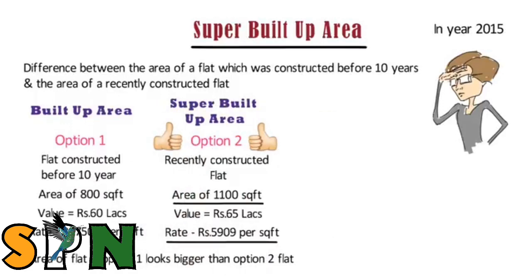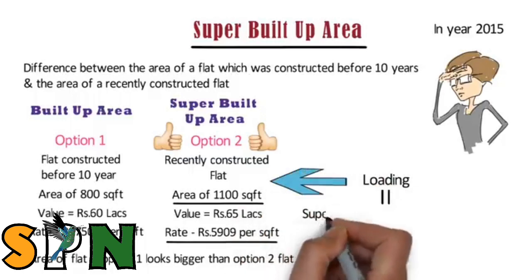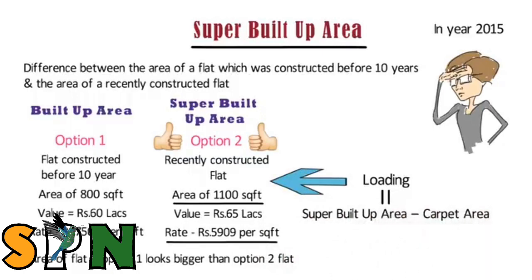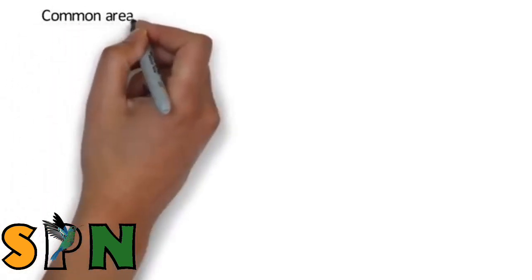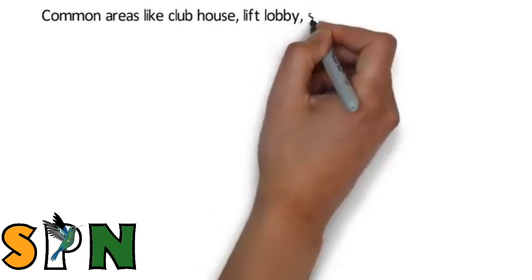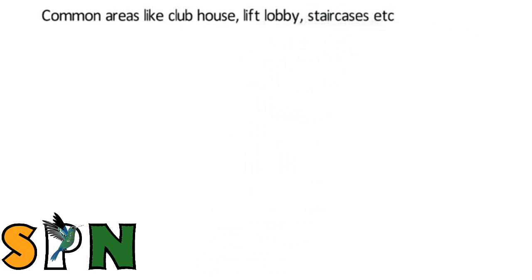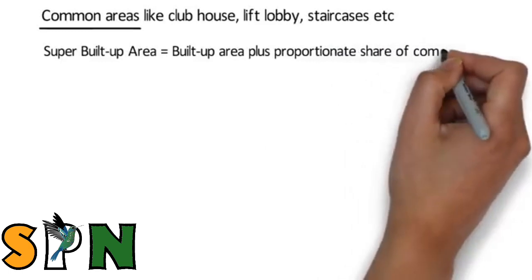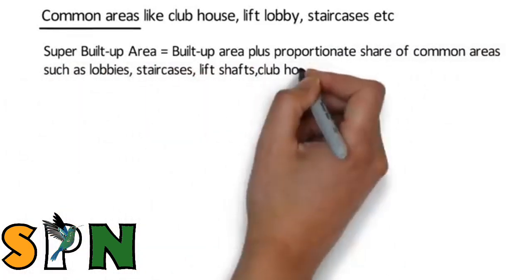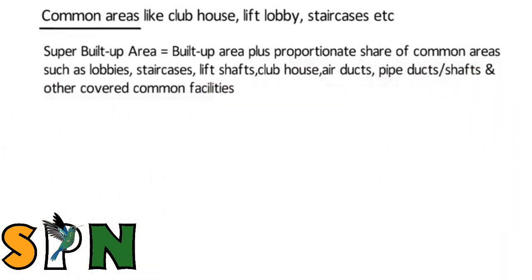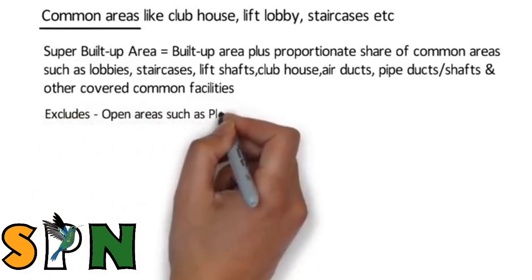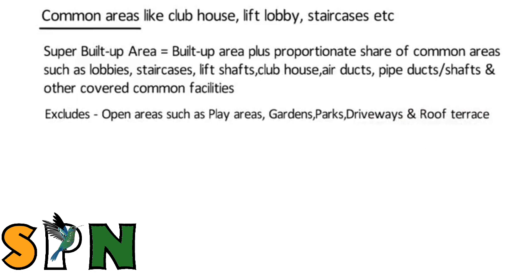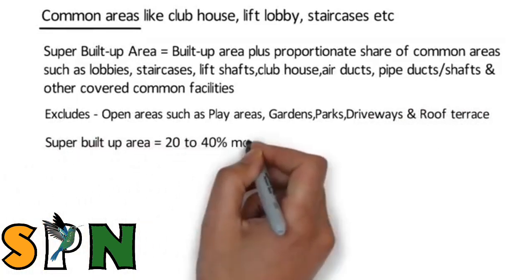When I asked a real estate agent about these areas, he told me about the loading factor. The loading on the recently constructed flat was more. The difference between super built up area and carpet area is called loading. When a builder constructs a building, he constructs common areas like clubhouse, lift lobby, staircases, etc., which are used by all people in the building. So while deciding the price of a flat, he adds the area of these common amenities to individual flats — this area is called super built up area. Super built up area is the built up area plus a proportionate share of common areas such as lobbies, staircases, lift shafts, clubhouse, air ducts, pipe ducts or shafts and other covered common facilities. Super built up area excludes open areas such as play areas, gardens, parks, driveways and roof terrace. Super built up area is approximately 20 to 40% more than carpet area.